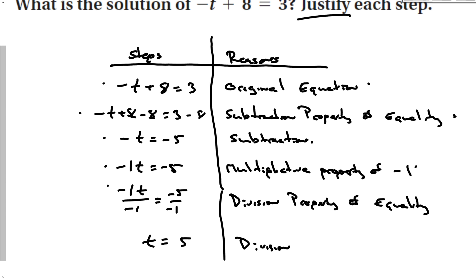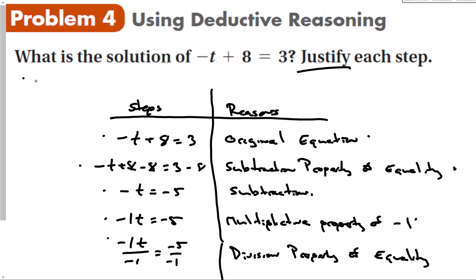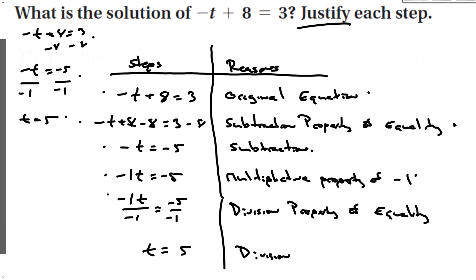Normally when solving, you don't write out every property explicitly. You'd just say: negative t plus 8 equals 3, subtract 8 from both sides to get negative t equals negative 5, divide by negative 1, and t equals 5. As long as you understand each step comes from these properties, you can solve any two-step equation.